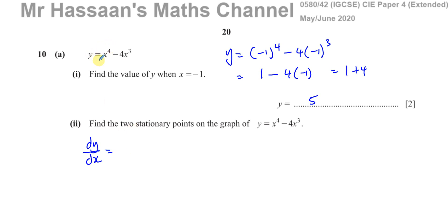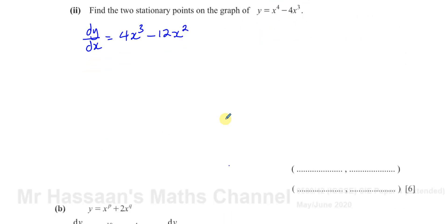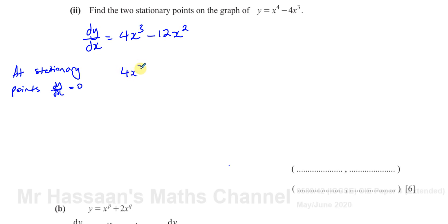If you differentiate x to the power of 4 with respect to x, you multiply by the power — that's 4 — and then take 1 from the power, giving 4x to the power of 3. Similarly, 3 times minus 4 is negative 12, and you subtract 1 from the power so it becomes to the power of 2. To find the stationary points, we equate dy/dx to zero: 4x cubed minus 12x squared equals zero.